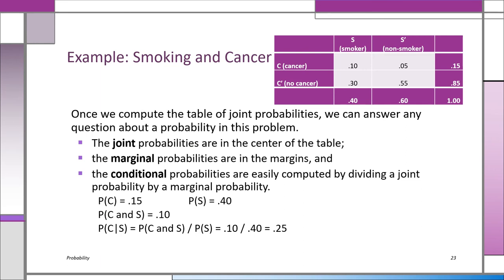Once you have a joint probability table, you can answer any question about probabilities. The joint probabilities are in the center of the table; the marginal probabilities are on the margins. For conditional probabilities, you just take a joint probability divided by the appropriate marginal. For example, P(C|S): look up P(C and S) = 0.10, and P(S) = 0.40. Divide 0.10 by 0.40 and you get 0.25 — the conditional probability of dying of cancer given that you're a smoker.